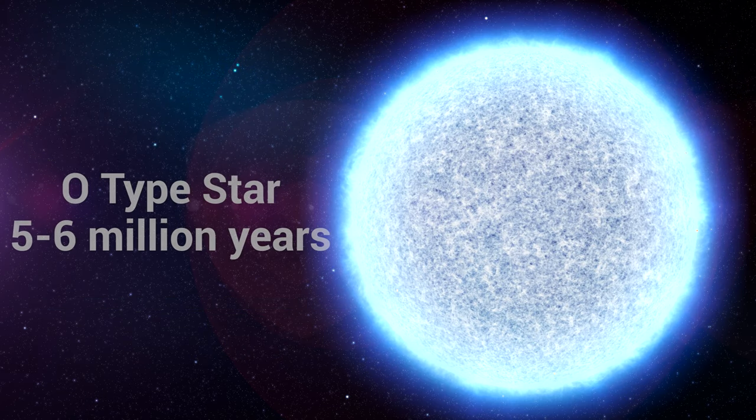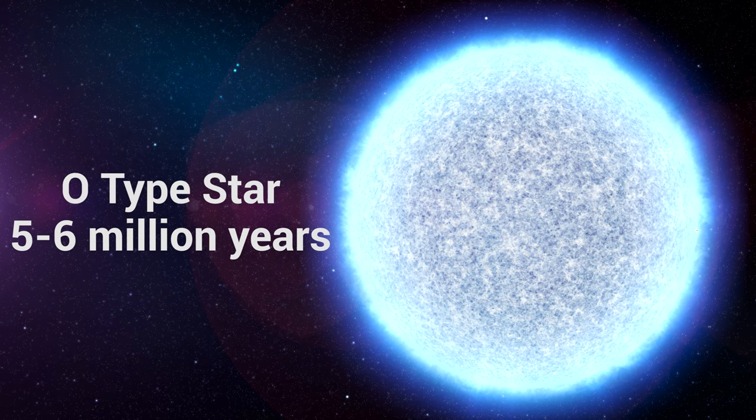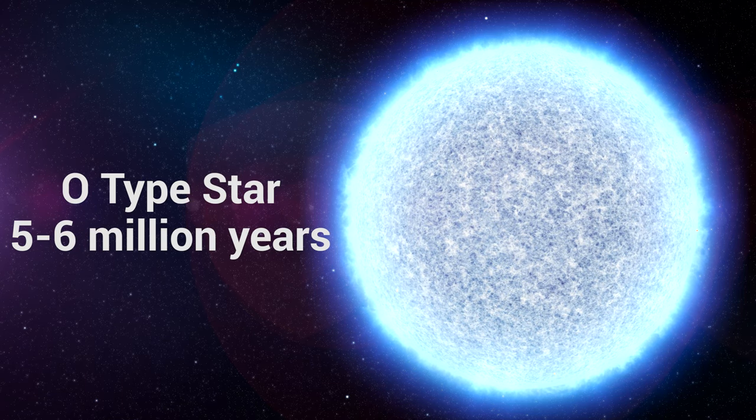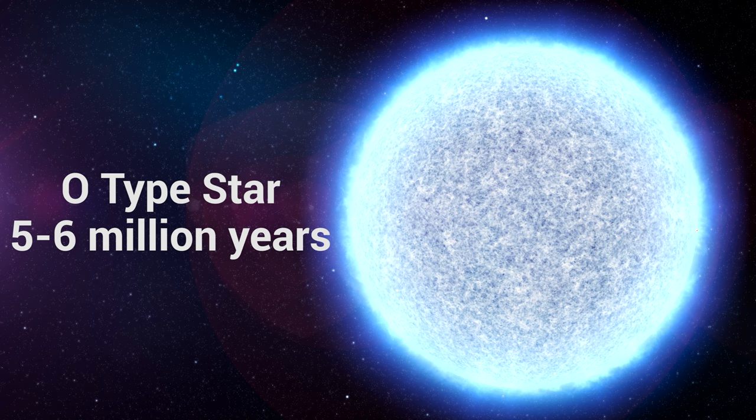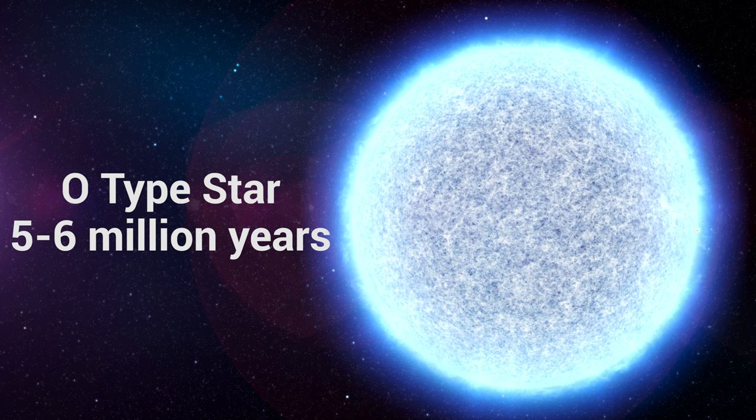The stars with the shortest lifespan that exist in the present-day universe would be the blue O-type stars. The reason for this is because they are the most massive stars existing today. And as we found out, the more massive a star is, the hotter it is.